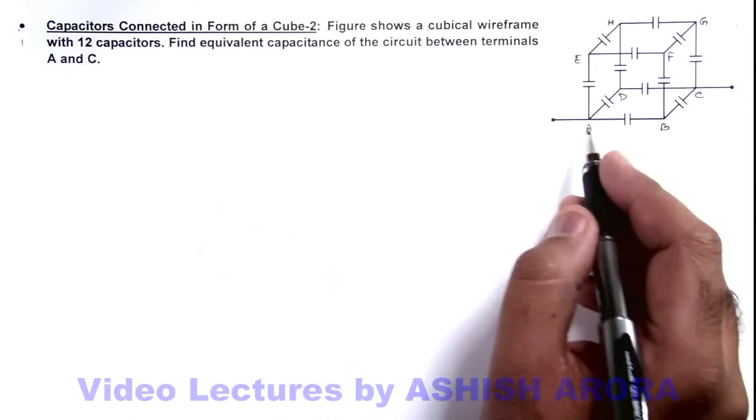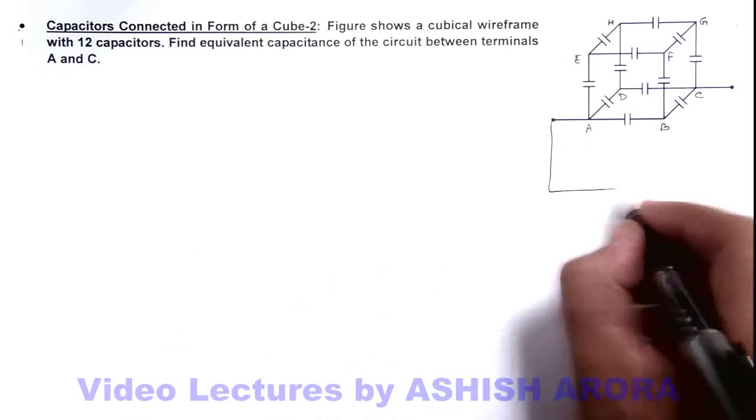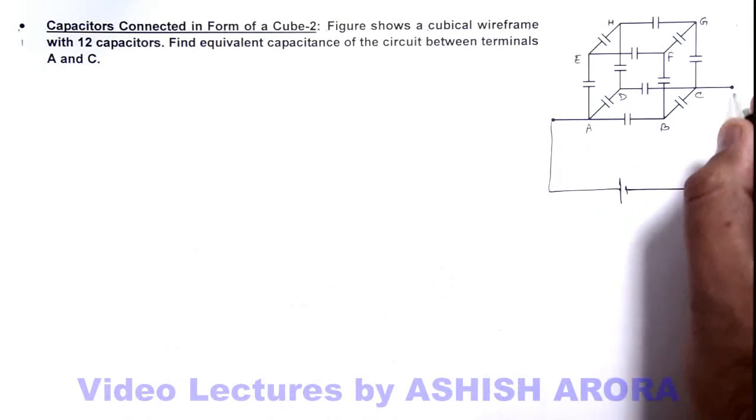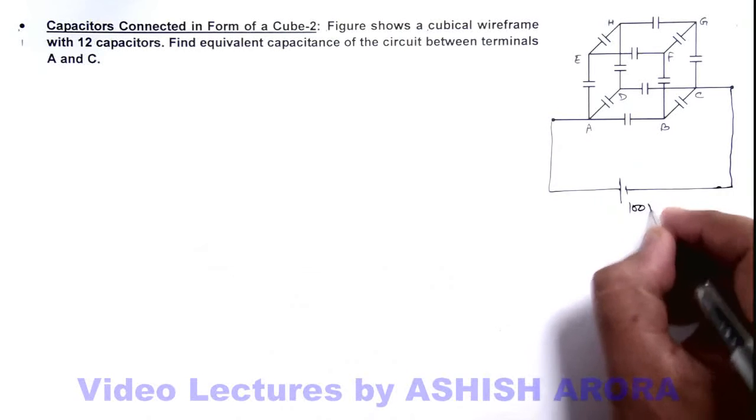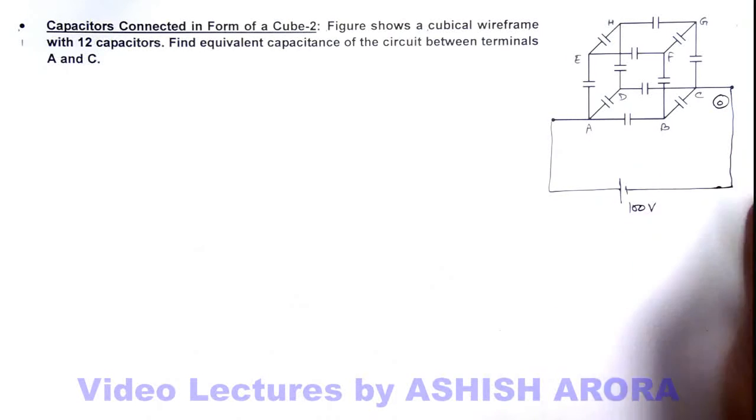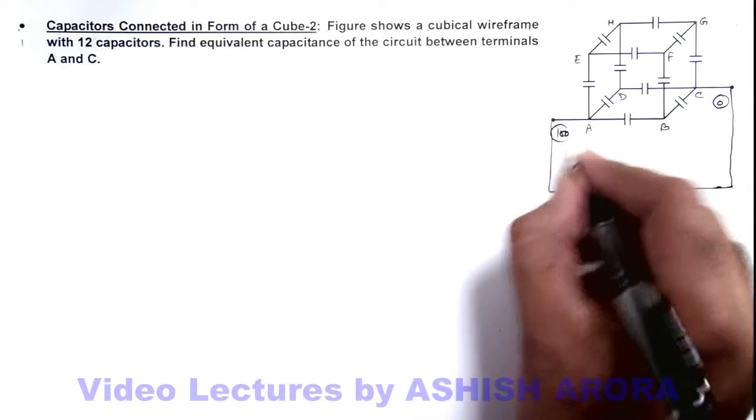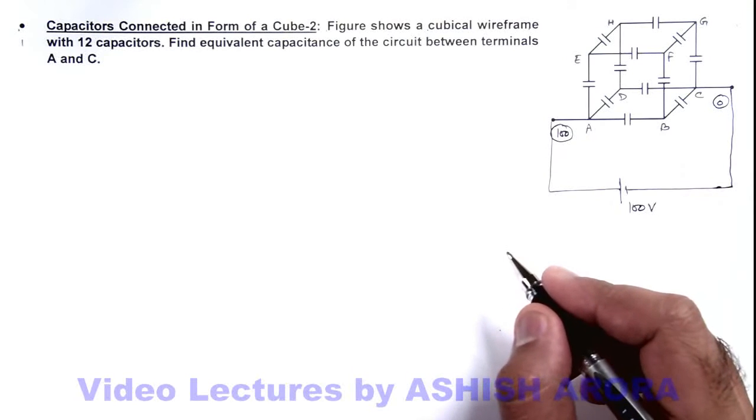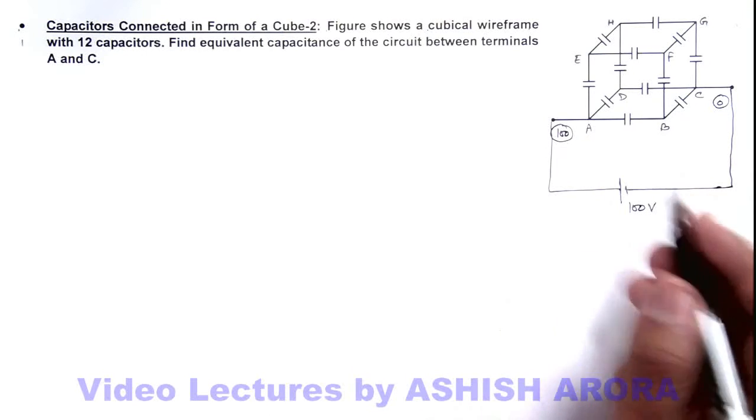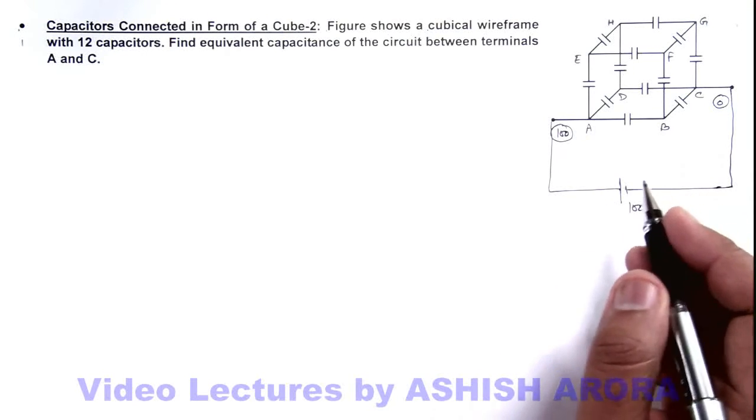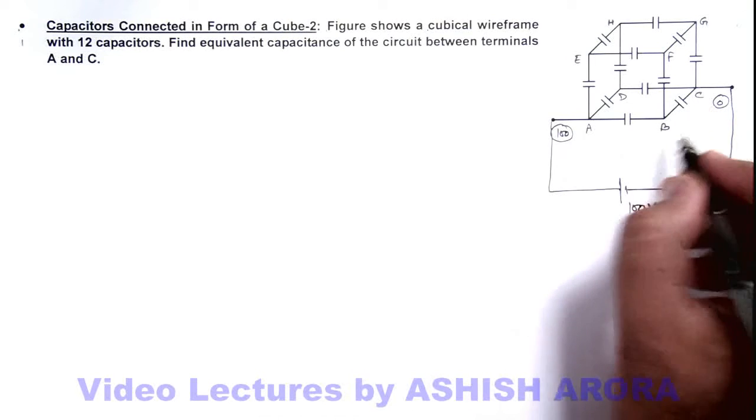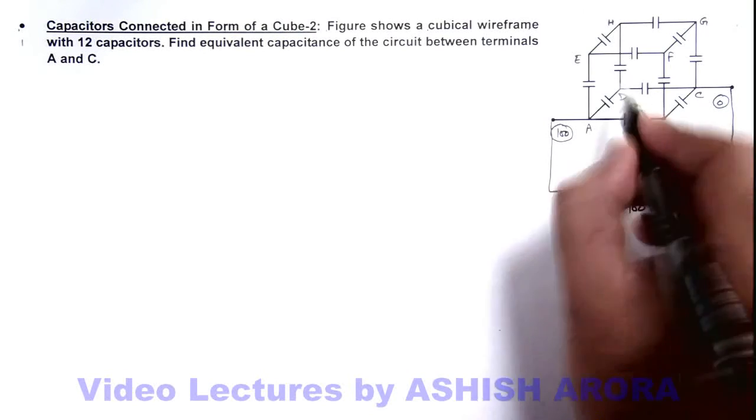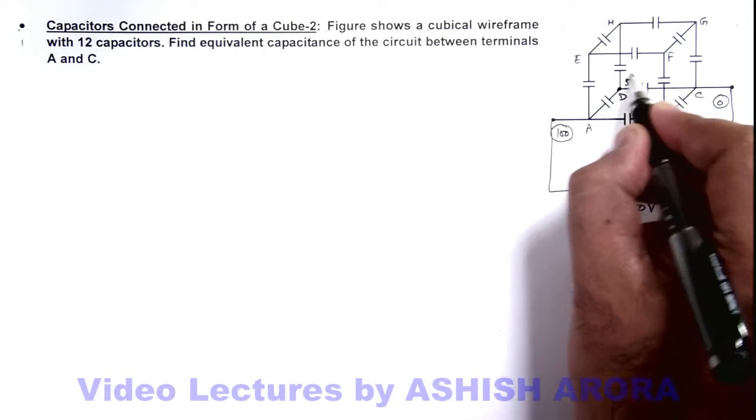If we apply a 100 volt battery for nodal analysis, then we can take potential on one side as zero and on another side it is 100. In this situation, if we distribute the potentials, we can see if this is 100 and this zero potential at point B can be directly taken as 50. Here also it can be taken as 50.